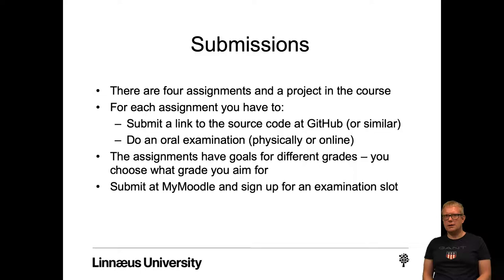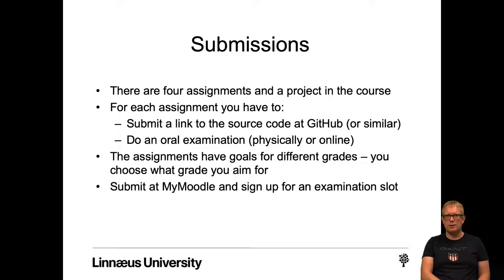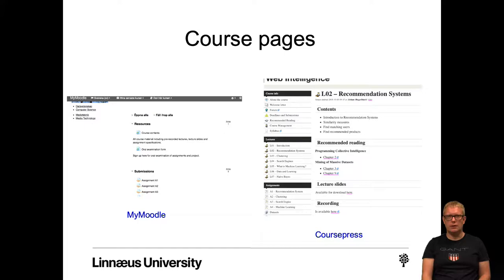There are some submissions you have to do in the course: four assignments and a project. For each assignment and the project you have to submit a link to source code at GitHub. You also have to do an oral examination, either physically at my office or online over Slack. The assignments and project have goals for different grades and you choose what grade you aim for. You submit the code at Moodle and sign up for an examination slot for the oral examination. We use two course pages: Moodle, which is only used for submitting things.